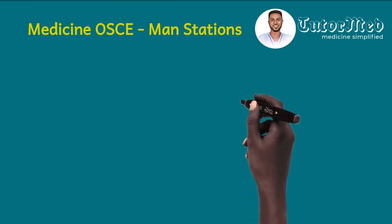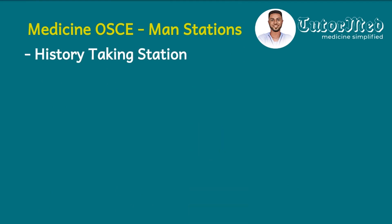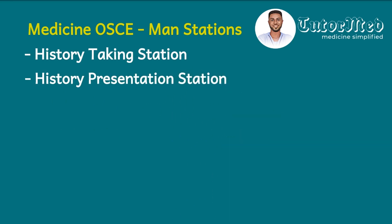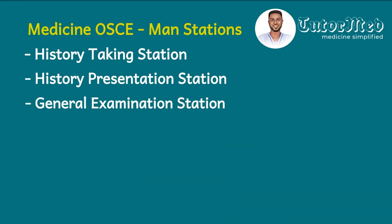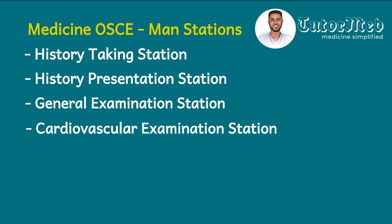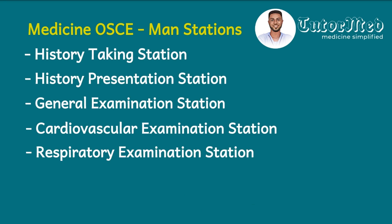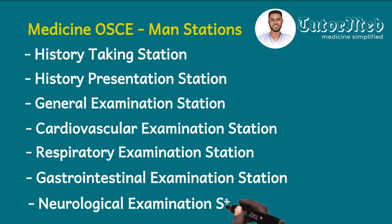For the manned stations in internal medicine there is a station on history taking, after which there is a station on history presentation — so after you've taken your history you go to another station to present it and be assessed by the examiner. Then there is a general examination station, a cardiovascular examination station, a respiratory examination station, a gastrointestinal examination station, and a neurological examination station.